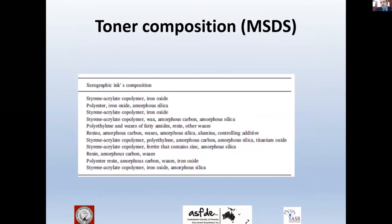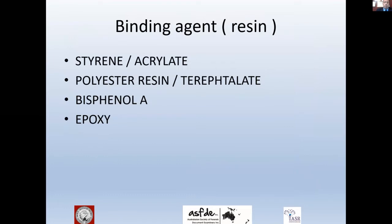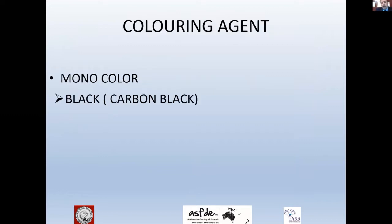According to the machine data sheet for toner composition of laser printer cartridges, there are many components, mainly a binding agent which includes styrene, polyester resin, base vinyl A, and epoxy, as well as a coloring agent. In monocolor printers, carbon black is the colorant agent.